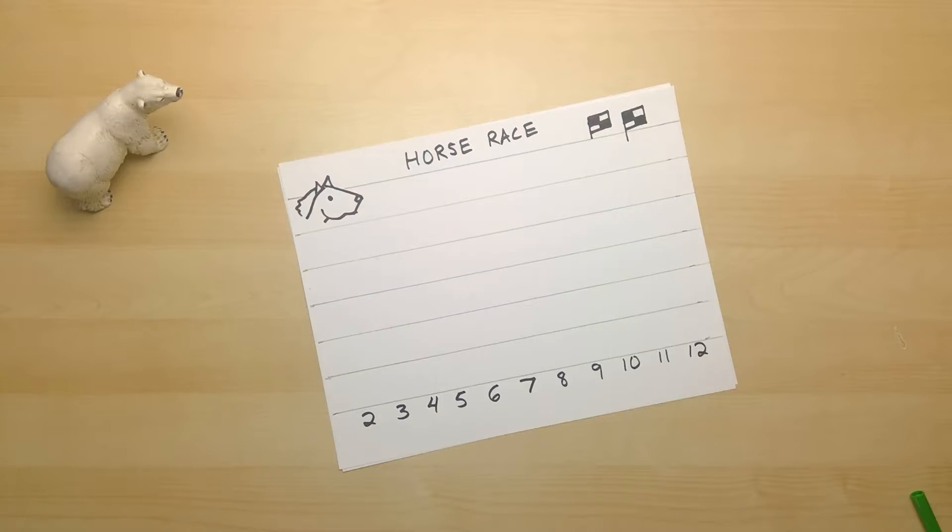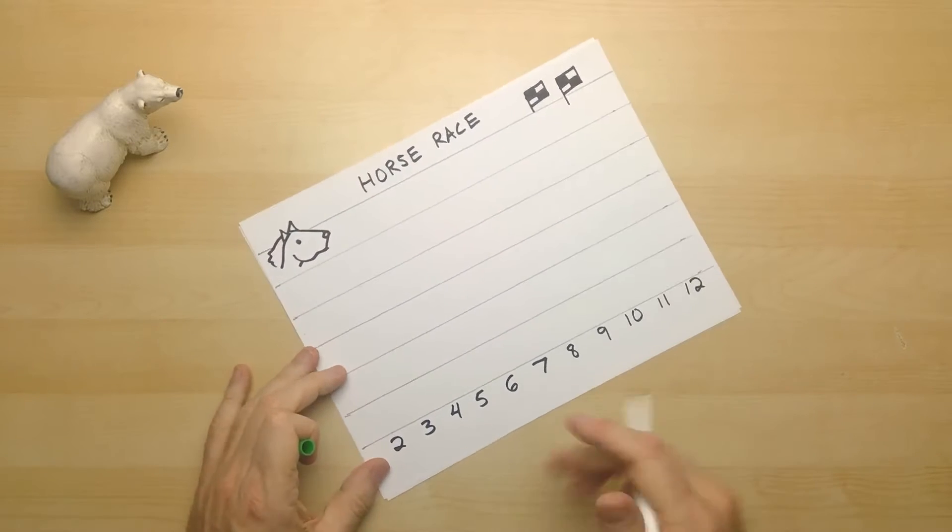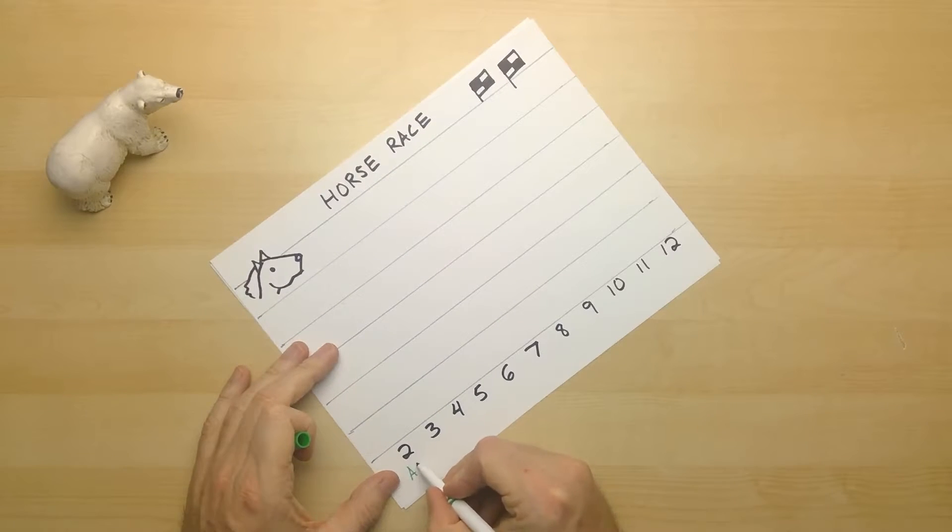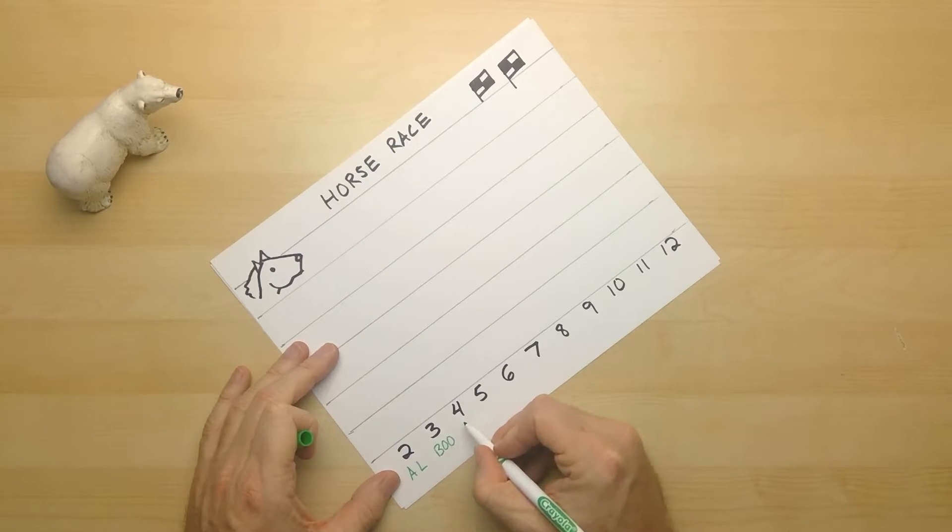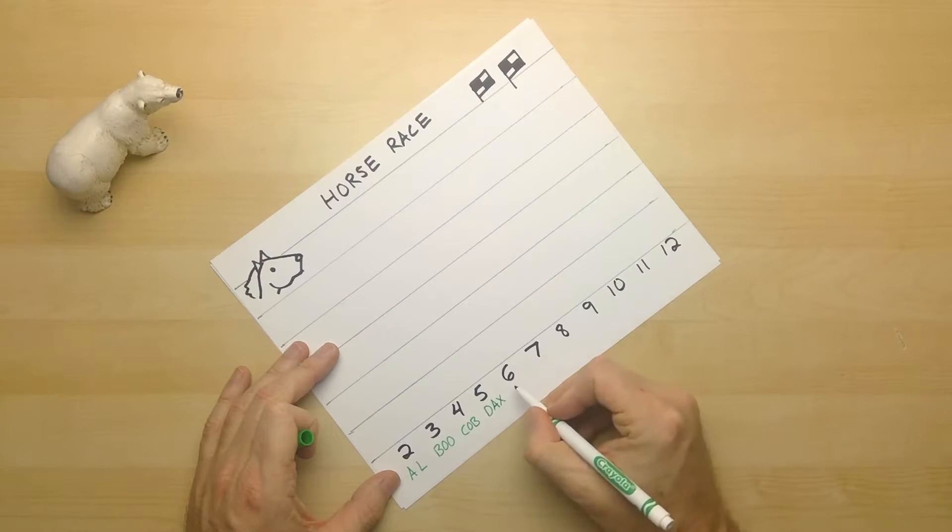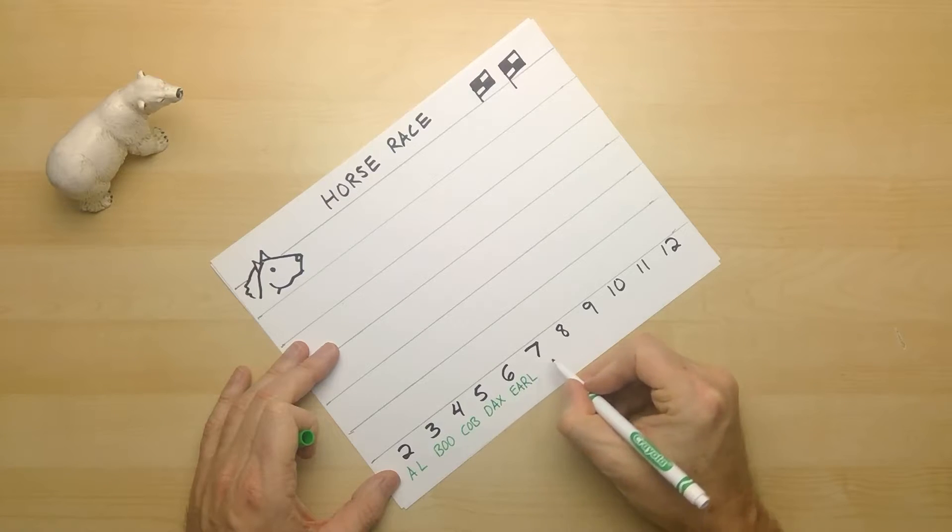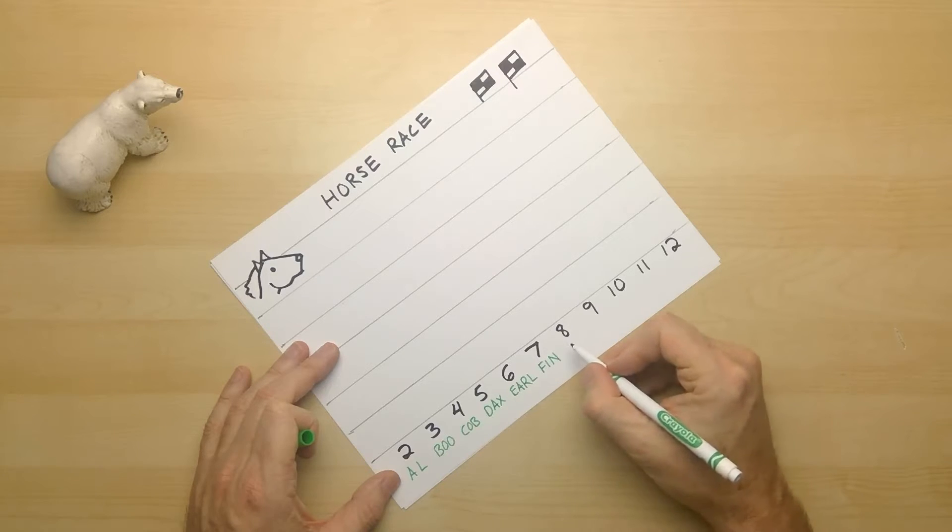Now we need to give the horses some names. Let's see. What can we name them? Number two is going to be called Al. Three will be called Boo. And four, Cobb. Five, Dax. Six is called Earl. Seven is called Finn. Eight, Gigi.